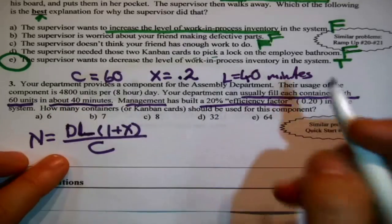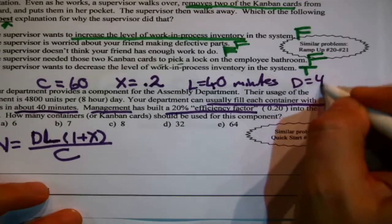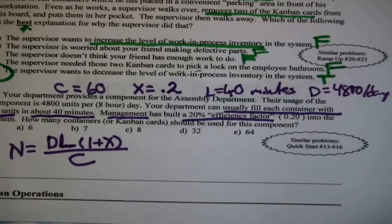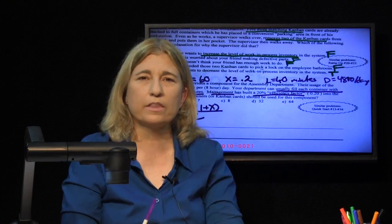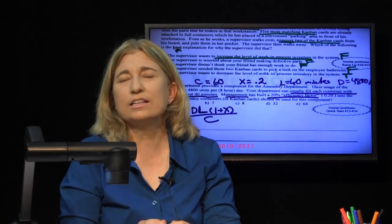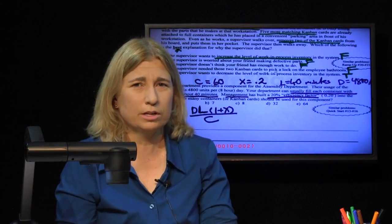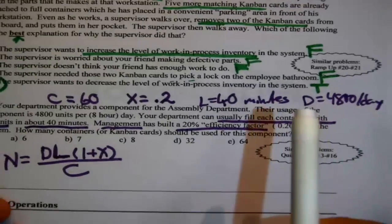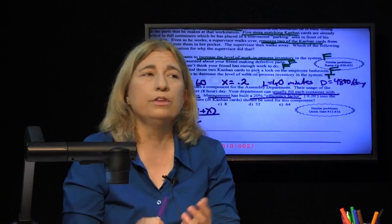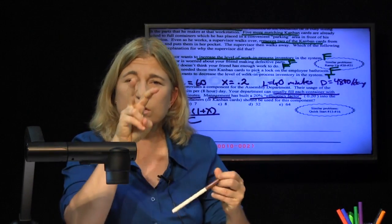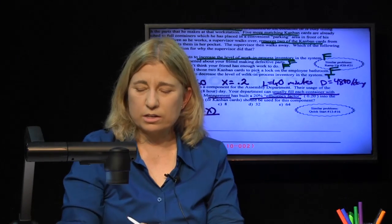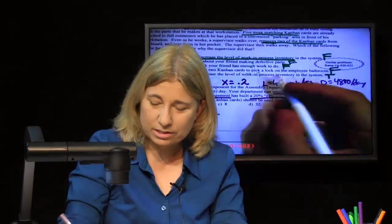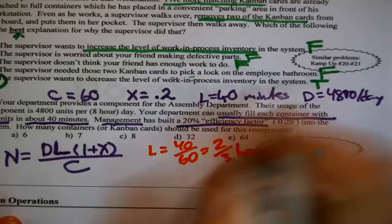Their usage rate: D equals 480 units per day. Now, D and L have to be talking about the same unit of time, otherwise you get nonsense. L is in minutes and D is per day — those are two different things. The easiest fix for this problem is to convert them both to hours. L equals 40 divided by 60, which is two-thirds of an hour. And since they told us there are eight hours in the day, D equals 480 divided by 8, which is 60 per hour.